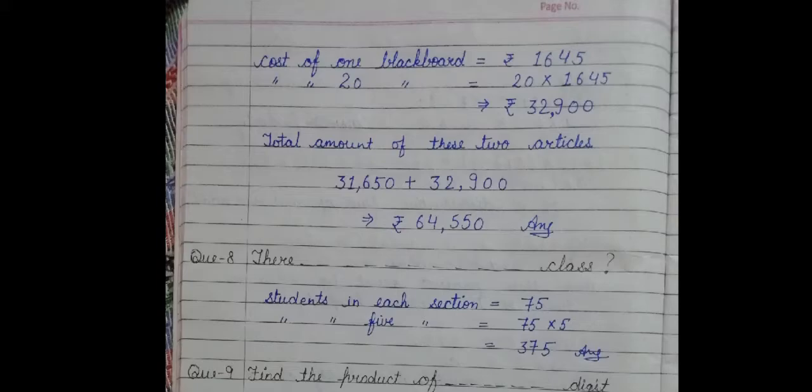Next, we have, there are 75 students in each section in a school and each class has five sections. How many total students are there in each class? So, there are 75 students in each section and we have five sections. So, five multiply by 75 will get our answer 375.